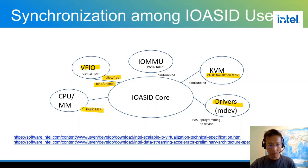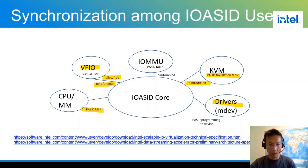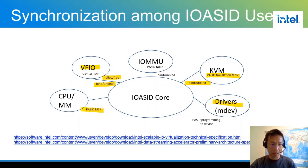KVM maintains a PASID translation table that performs guest-host PASID translation. The device driver, such as a media device, programs the actual PASID onto the device in order to generate DMA requests with the PASID stream. In order to synchronize all these users when the PASID state changes — such as being unbound — we must have some sort of notification. We proposed an IOACID notification chain for each VM or each IOACID set. For example, when the PASID is unbound, KVM will receive a bind notification event and then tear down its entry in the PASID translation table.